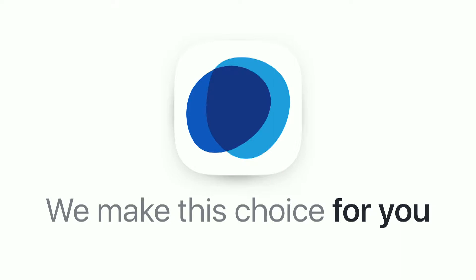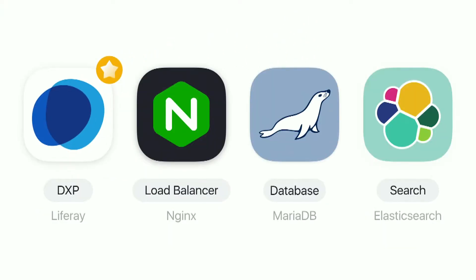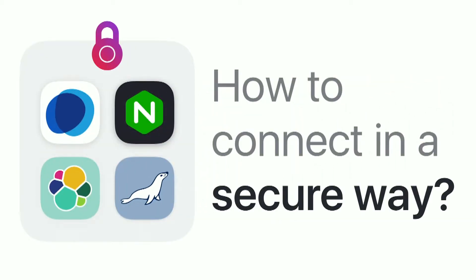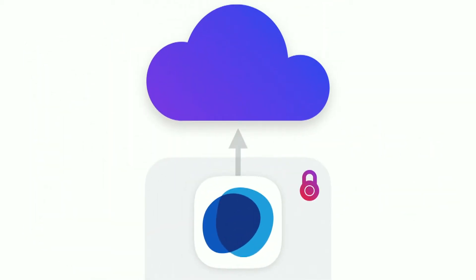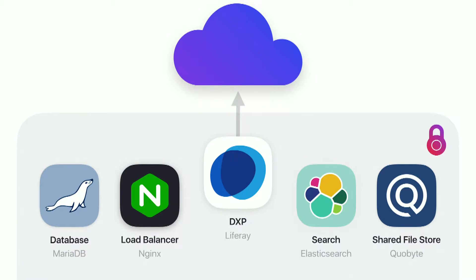DXP Cloud helps with those decisions by defining what technology it brings to the table. We have a stack of services: a load balancer using NGINX, a database using MariaDB with RDS behind the scenes, and Elasticsearch. And beyond choosing the technologies, how can you put them all together in a secure and reliable way? On DXP Cloud, we have this concept of a private network — inside a private network, you communicate with your services, and you only expose your load balancer to the internet.